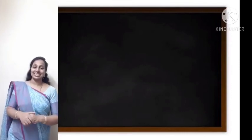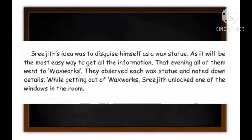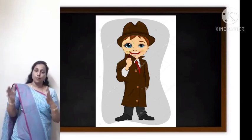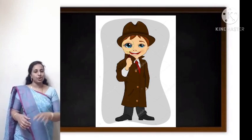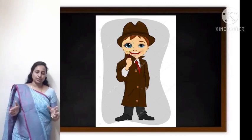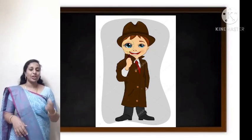Now let's see whether the children stopped their investigation. Sreejit's idea was to disguise himself as a wax statue, as it would be the easiest way to get all the information. That evening, all of them went to the Wax Works. They observed each wax statue and noted down details. While getting out, Sreejit unlocked one of the windows in the room — so the children continued despite the inspector's warning.